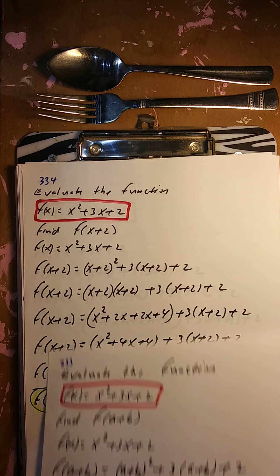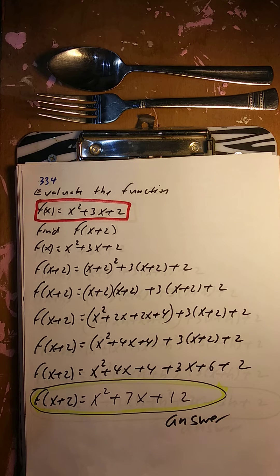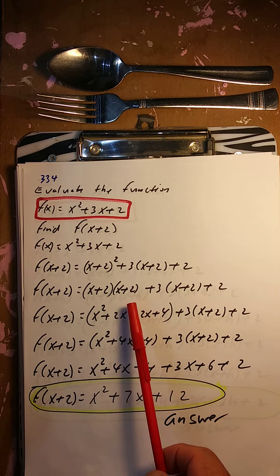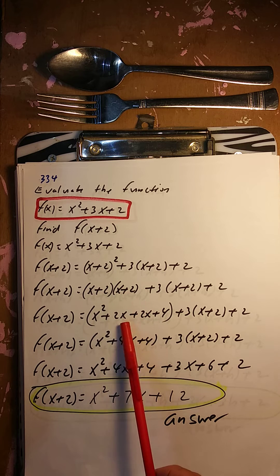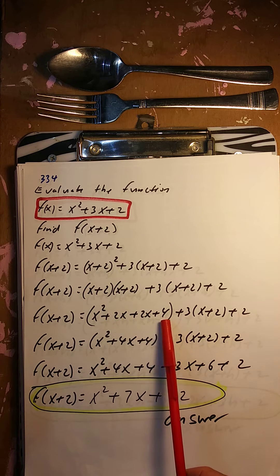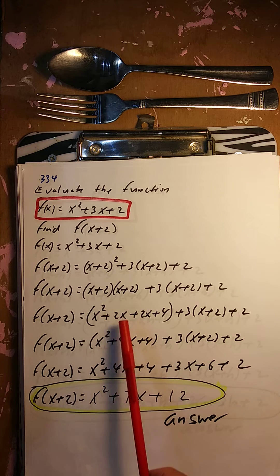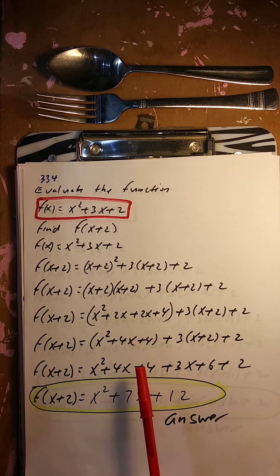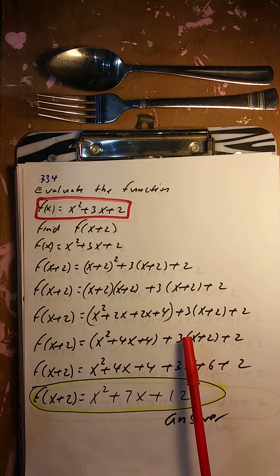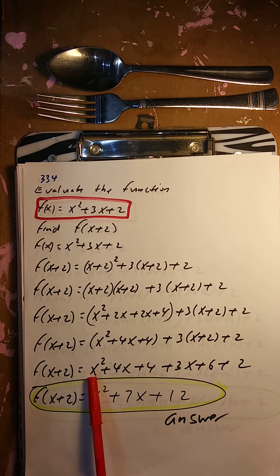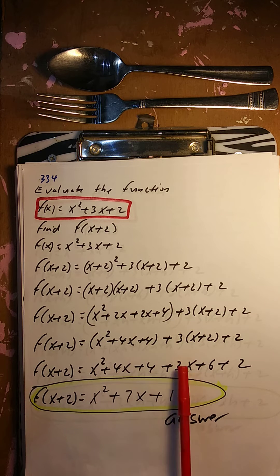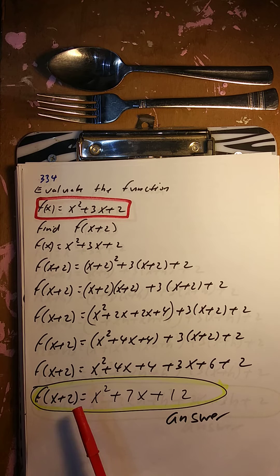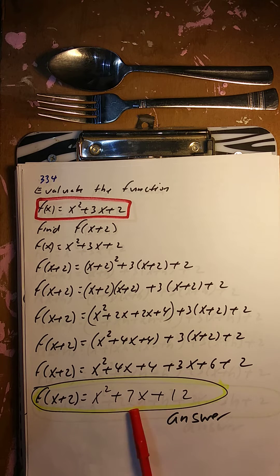Evaluate f of x plus 2. Put x plus 2 in for the x's. x plus 2 squared means x plus 2 times x plus 2. So x squared plus 2x plus 2x plus 4, which is x squared plus 4x plus 4. Then plus 3 times x plus 2, which is 3x plus 6, and the 2. Combine like terms: x squared stays, 4x and 3x is 7x, 4 plus 6 is 10 plus 2 is 12. So f of x plus 2 is x squared plus 7x plus 12.